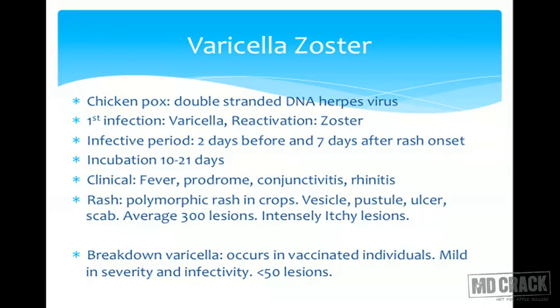The infective period is two days before to seven days after onset of rash. Varicella has a polymorphic rash — unlike measles. A macule progresses to papule, then vesicle (a pearl-like elevated fluid-filled lesion), then ruptures to form an ulcer, followed by scab. Different stages are seen simultaneously in different body areas — macule, pustule, vesicle, and scab — hence polymorphous rash. About 300 lesions appear and are intensely itchy. Breakthrough varicella in immunized children is mild, with fewer than 50 lesions.